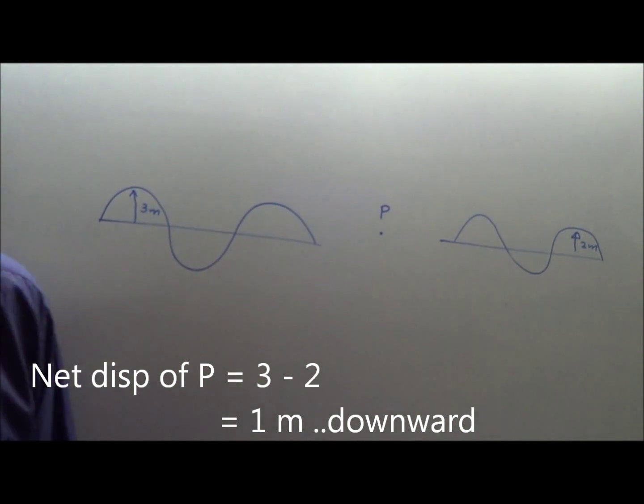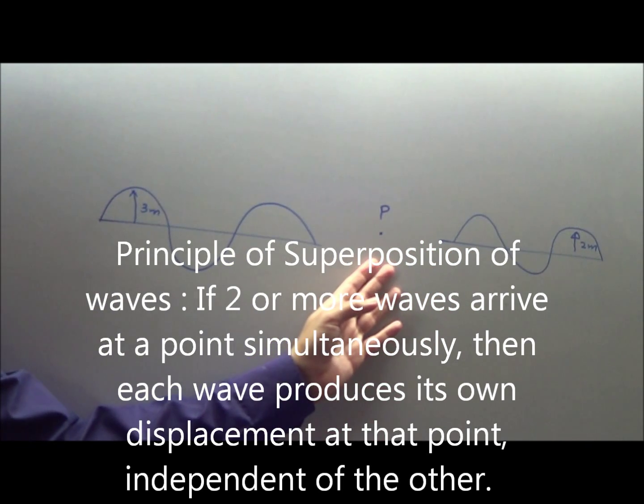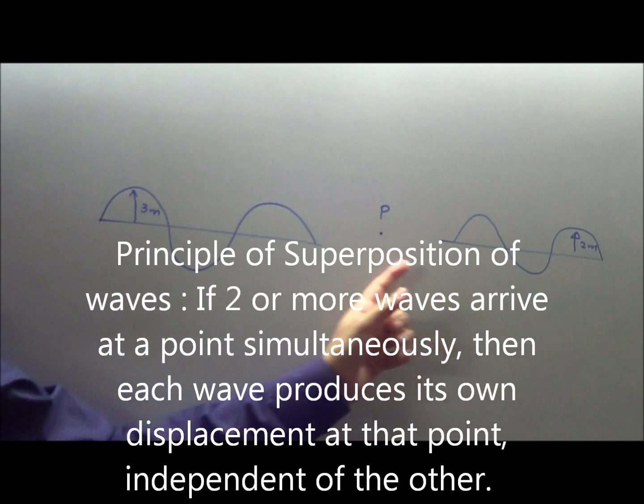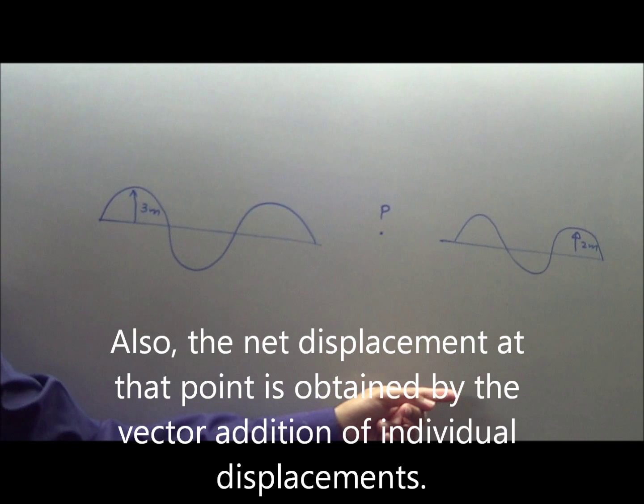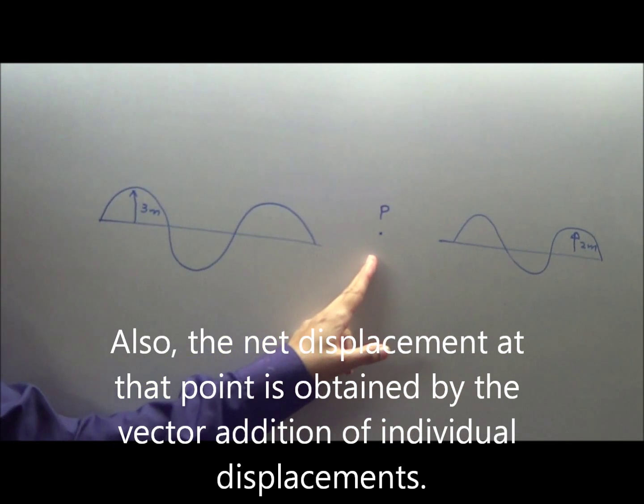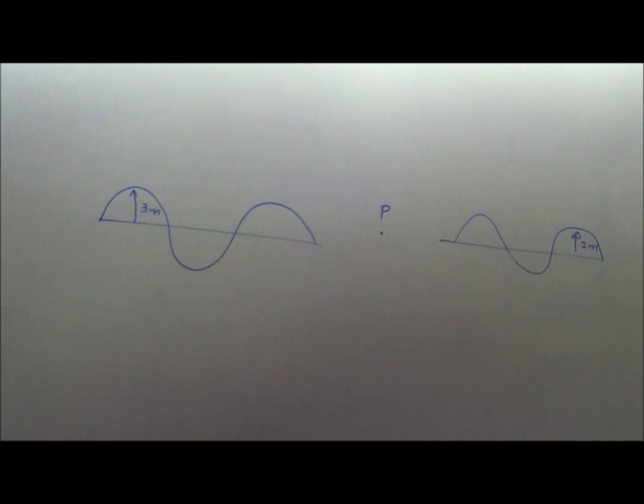In short, what is the principle of superposition of waves? When two or more waves arrive at a point simultaneously, each wave produces its own displacement at point P independent of others, and the net displacement of point P is obtained by vector addition of individual displacements. This is the principle of superposition of waves.